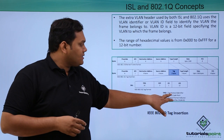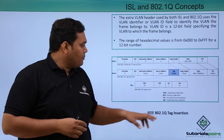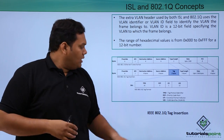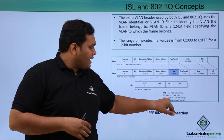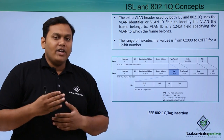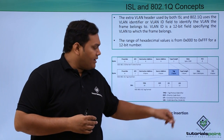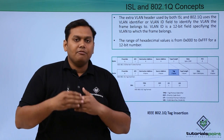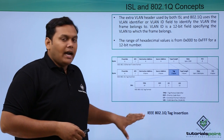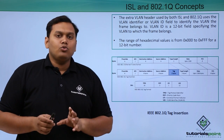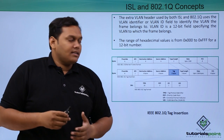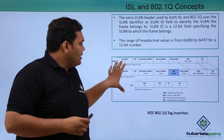The tag fields are: TPID — Tag Protocol Identifier; PCP — Priority Code Point; CFI — Canonical Format Indicator; and VID — VLAN Identifier, which is the VLAN ID. This is the format of the IEEE 802.1Q tag or header.